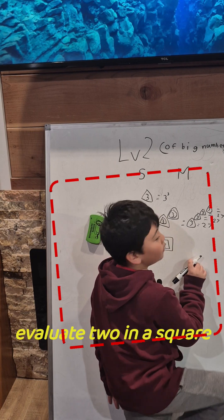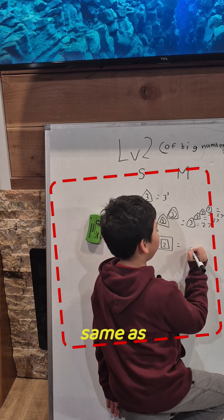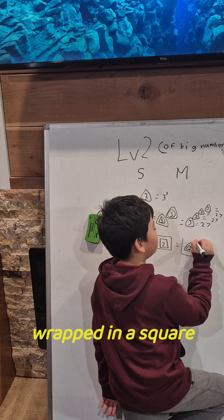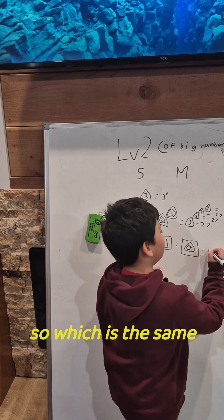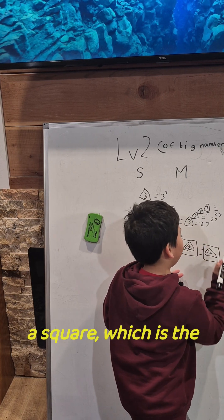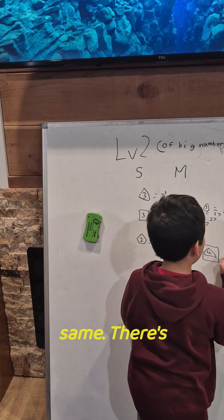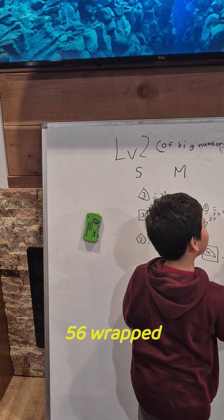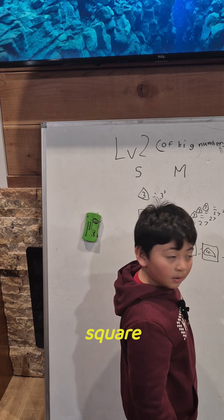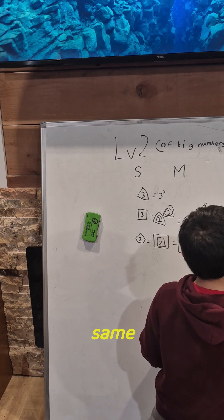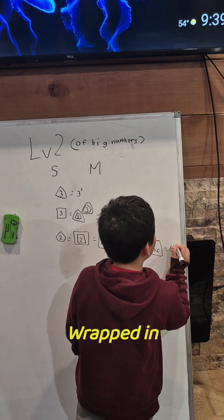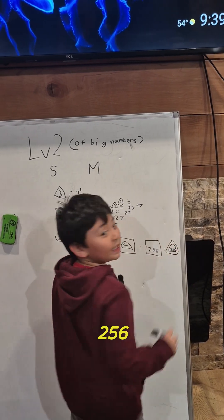Let's evaluate 2 in a square first. That's the same as 2 wrapped in 2 triangles, wrapped in a square. Which is the same as 4 wrapped in a triangle, wrapped in a square. Which is the same as 256 wrapped in a square. Which is the same as 256 wrapped in 256 triangles.